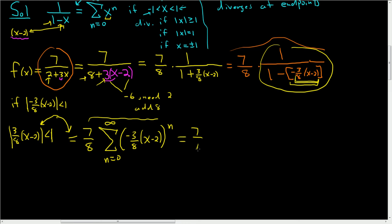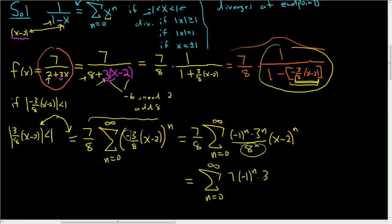So this is equal to 7 eighths sum as n goes from 0 to infinity. And then we're going to have negative 1 to the n because of the negative. Then we're going to have 3 to the n, and then we're going to have 8 to the n now. There's some messy algebra there, but if you've done the ratio test, you've seen this before. And this is x minus 2 to the n. I guess you could combine the 8 with 8 to the n. So this is the sum, as n runs from 0 to infinity, 7 times negative 1 to the n, 3 to the n, all over 8 to the n plus 1, and then x minus 2 to the n.